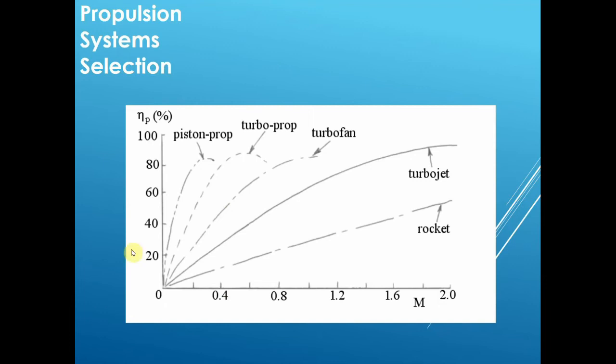It's interesting to look at the propulsion system efficiency, and this is the efficiency of a propulsion system against Mach number for different engine variations. Again, if we look at Mach number 0.8, which is where most civil jet aircraft operate, then we can see the turbofan design is the one that operates at the maximum efficiency.